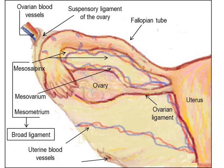Each tube has two openings: a proximal opening nearest to the uterus, and a distal opening furthest, opening to the abdomen. The fallopian tubes are held in place by the mesosalpinx, a part of the broad ligament mesentery that wraps around the tubes.